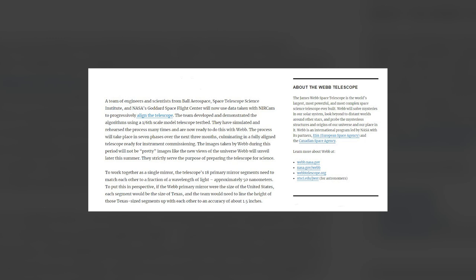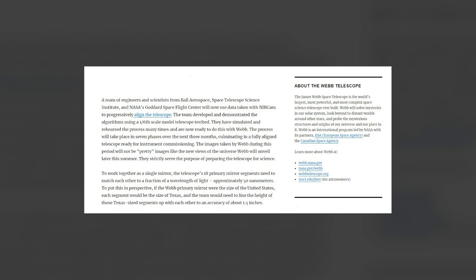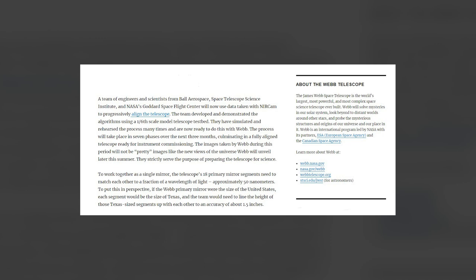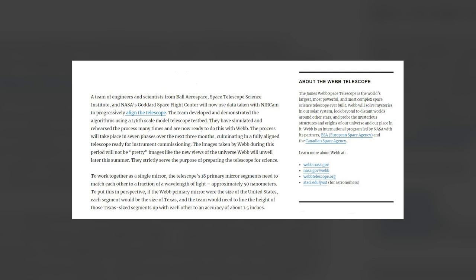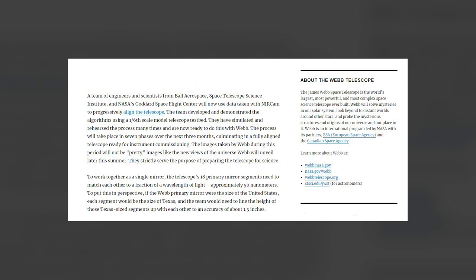The process will take place in seven phases over the next three months, culminating in a fully aligned telescope ready for instrument commissioning. The images taken by Webb during this period will not be pretty images like the new views of the universe Webb will unveil later this summer. They strictly serve the purpose of preparing the telescope for science. To work together as a single mirror, the telescope's 18 primary mirror segments need to match each other to a fraction of a wavelength of light, approximately 50 nanometers.